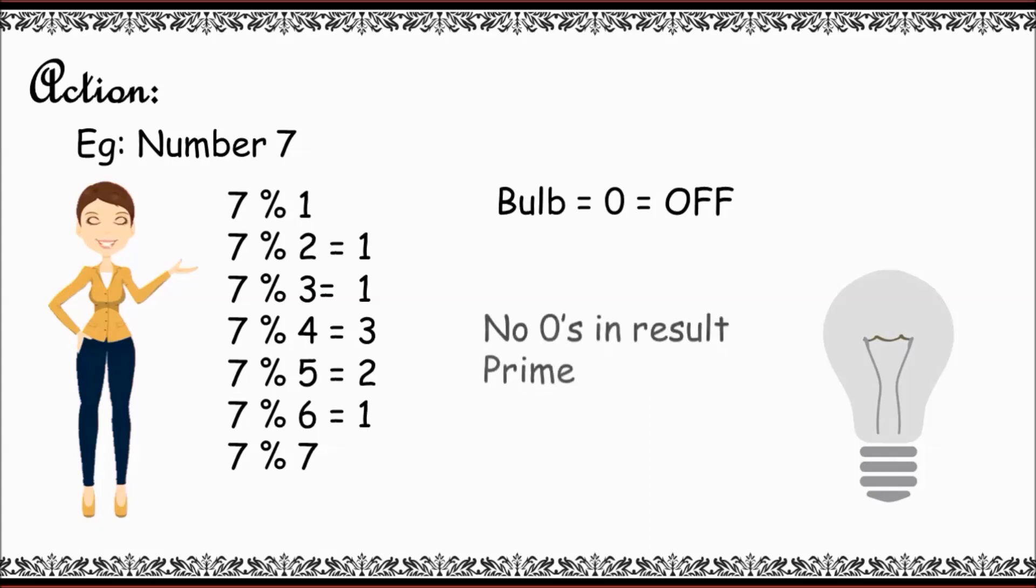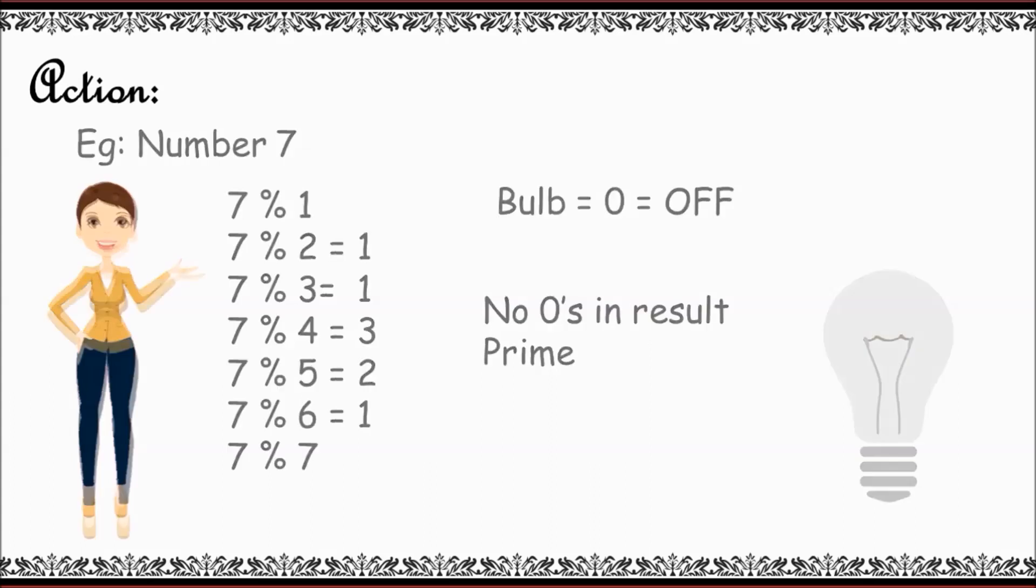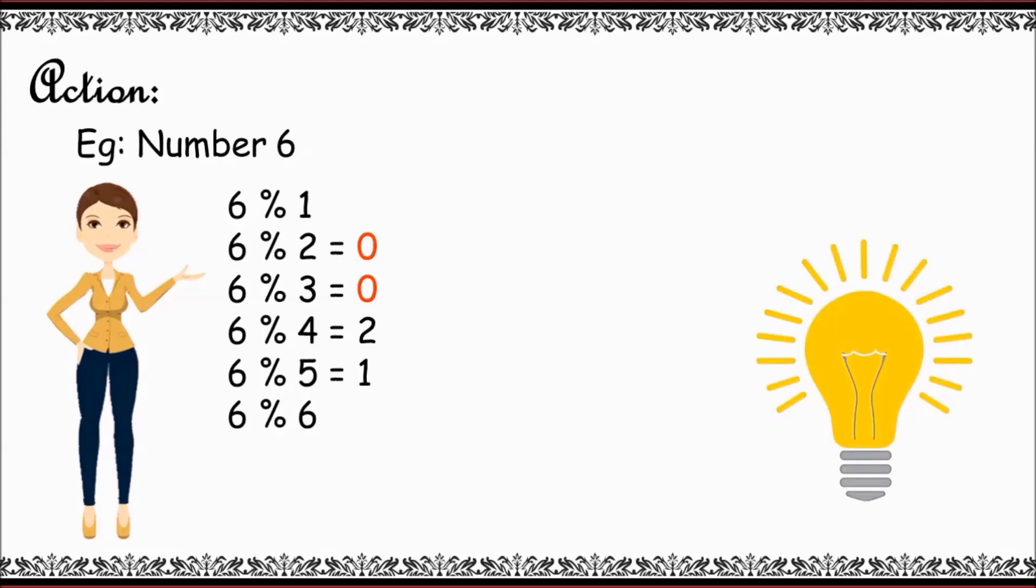In other words, let me consider number 6. Here also, I'll be eliminating 1 and the same number, that is 6. But here you can see a few zeros in the result, right? So on seeing zeros, we can say that the bulb is in on state. When bulb is on, we can say that the given number is a non-prime number.